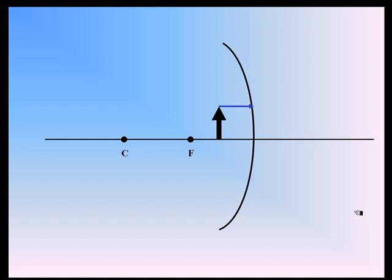The first one is we draw a line parallel to the principal axis, and then it's reflected through the focal point. The second one is as if it were coming from the focal point, and then it will be parallel. And then the third one is through the center of curvature.